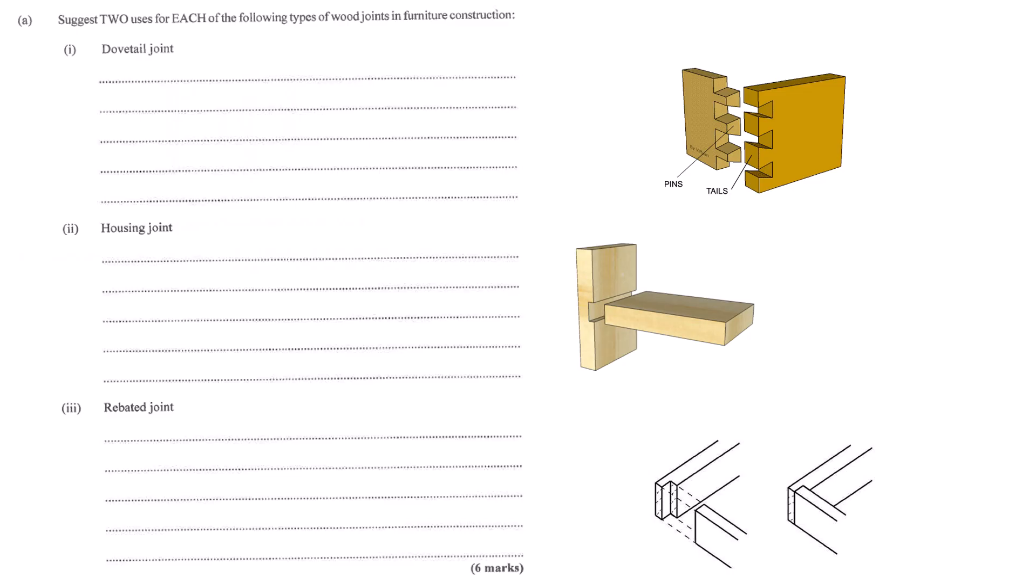What about a housing joint? It is simpler but very effective. Imagine cutting a groove across the inside face of, say, a bookcase side panel. Then the edge of the shelf just fits snugly into that groove. Provides really good support for the shelf. Simple and solid. You also use them for horizontal rails in frame structures sometimes.